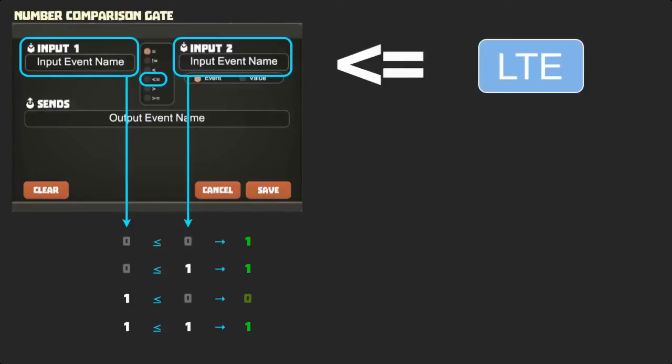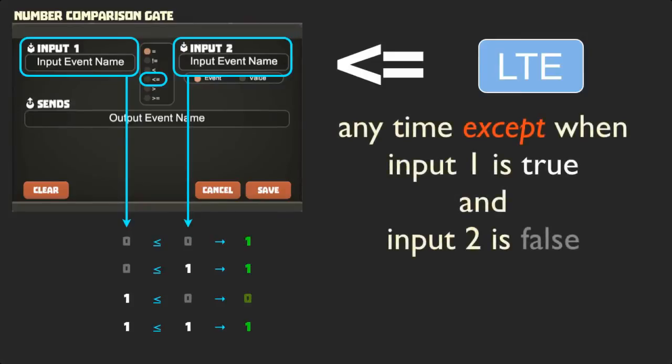We can frame our rule accordingly to this inverse property and say the less than or equal to comparator outputs true any time except when input 1 is true and input 2 is false.